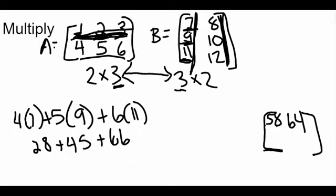And when we add all of that up, 28 plus 45 is 73, plus 66 there is going to give us a 139. So that means we have a 139 in this bottom left slot.